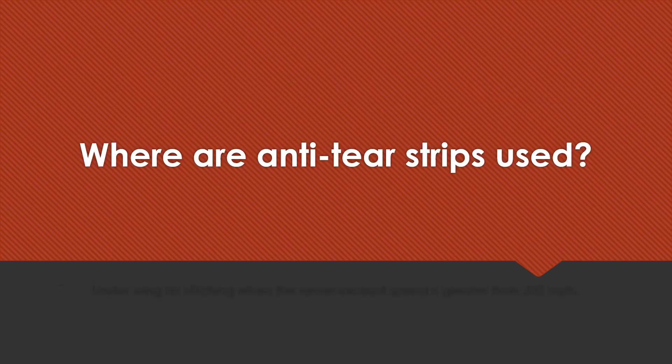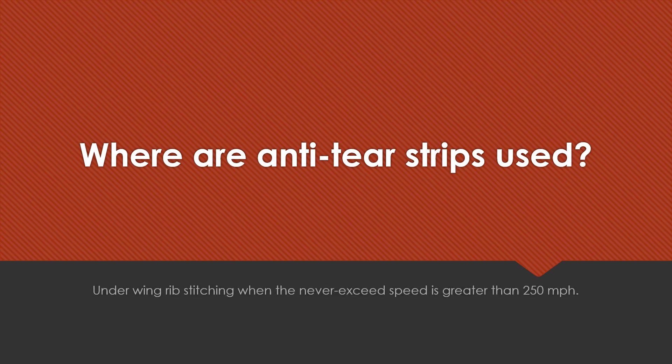Where are anti-tear strips used? Under wing rib stitching where the never-exceed speed is greater than 250 miles per hour.